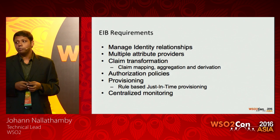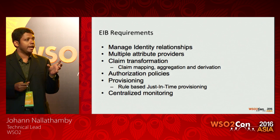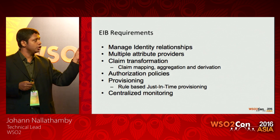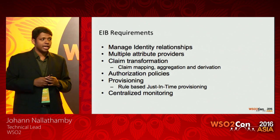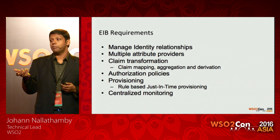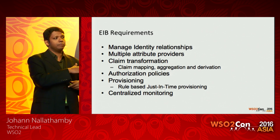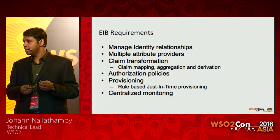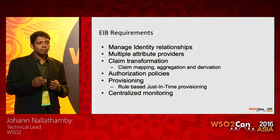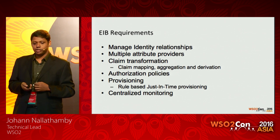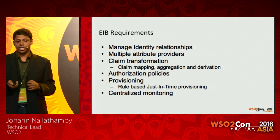Claim transformation is a very important requirement for an identity bus. Claim URIs in SAML or OpenID Connect differ between identity provider and service provider, so claim URI mapping is needed. Claim aggregation handles cases like when a service provider requests a full name but the system only has first name and last name. Claim derivation handles cases like when the service provider requests age but only date of birth is stored — age can be derived. Additional requirements include authorization policies using XACML, and JIT and rule-based provisioning.